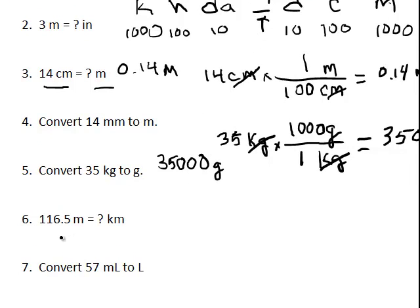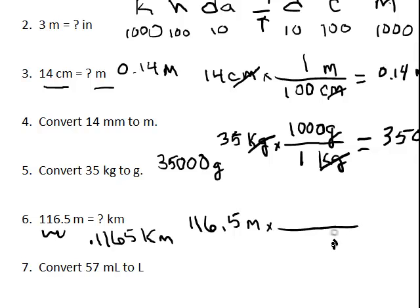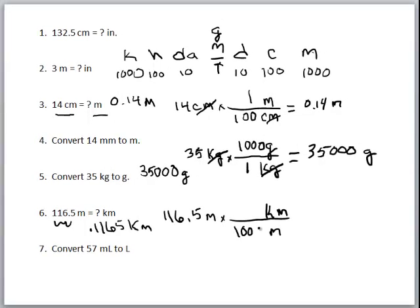Let's look at meters to kilometers. We're going one, two, three places, so moving the decimal three places gives us 0.1165 kilometers. For dimensional analysis, starting with 116.5 meters — from our chart we know there are 1,000 meters in a kilometer — putting that into our calculator, we get 0.1165 kilometers.